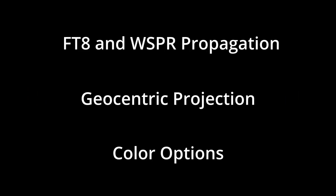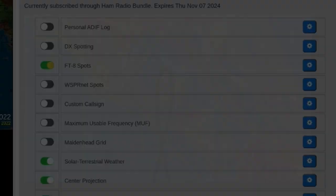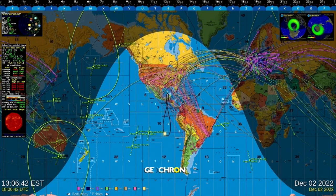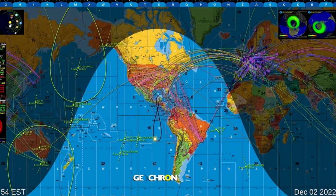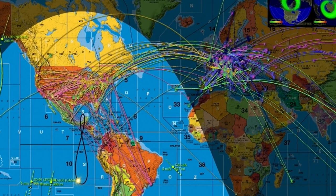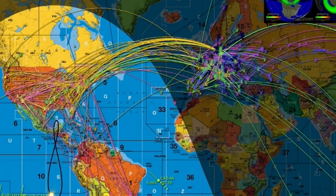In December of 2022, Geochron added some new features to the ham radio bundle: Whisper and FT8 propagation, geocentric location, and color selections for the AMSAT satellites. Let's look at FT8 and Whisper first. There is not enough space, even on a 4K screen, to show all radio traffic — especially with FT8. But you'll see plenty of activity in these modes to give you a complete picture of the bands that are active across the globe, color-coded by meter. The FT8 and Whisper displays are dynamically updated about every 15 seconds, with animation that will draw your eye to the newest transmissions.